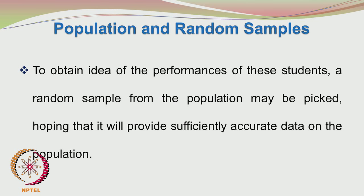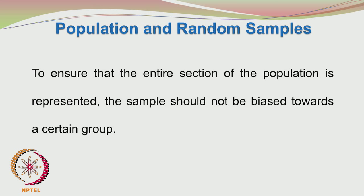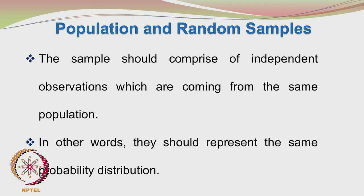So we have to get an idea of how these students majoring in mathematics are performing. We take a random sample from the population and we hope that the random sample we have picked is sufficiently representative of the entire population. The sample should not be biased towards a certain group. The sample should comprise of independent observations coming from the same population, having an identical probability distribution.